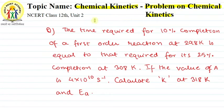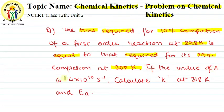The time required for 10% completion of a first order reaction at 298 Kelvin is equal to that required for its 25% completion at 308 Kelvin. The value of A (pre-exponential factor) is 4 × 10¹⁰ s⁻¹. Calculate K at 318 Kelvin and the activation energy Ea.